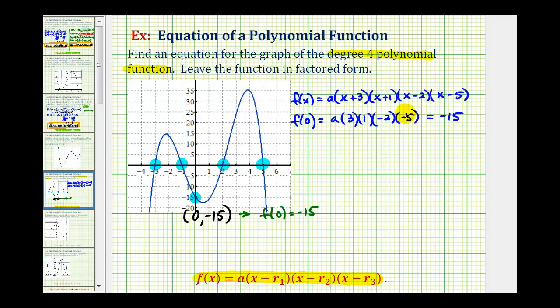Now we'll solve for a. Three times one times negative two, that's negative six, times negative five is positive thirty. So, we have thirty a equals negative fifteen. Divide both sides by thirty. We have a equals, this simplifies to negative one-half.